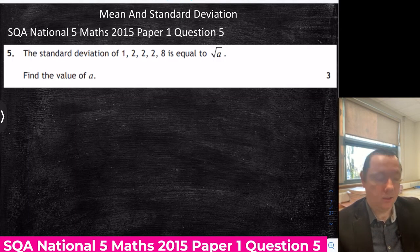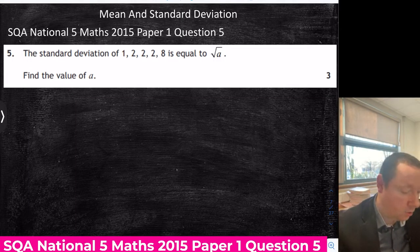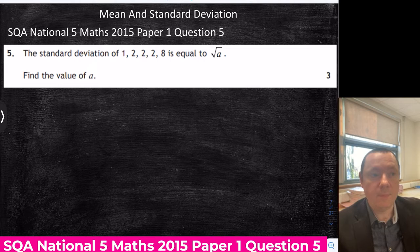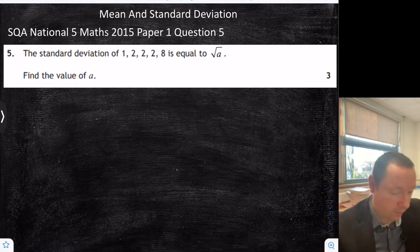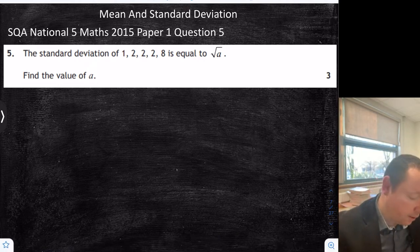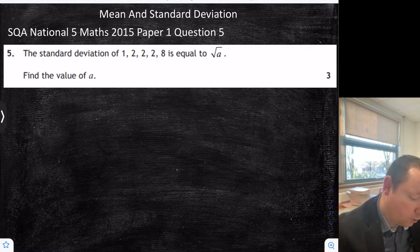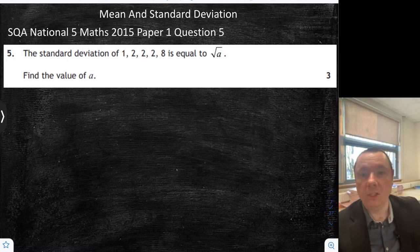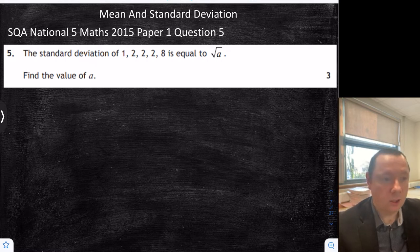Now a standard deviation question — this time non-calculator for a change. It was a 2015 Paper 1 Question 5 National 5 Maths exam. The standard deviation of 1, 2, 2, 2, 8 is equal to root a. Calculate the value of a. We just need to work out the standard deviation and then refer back to what the question is asking. So step 1: I'm going to work out the mean.